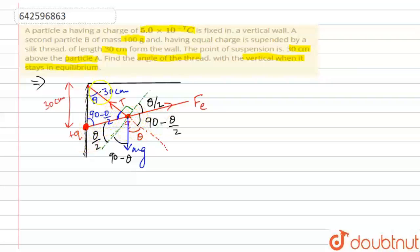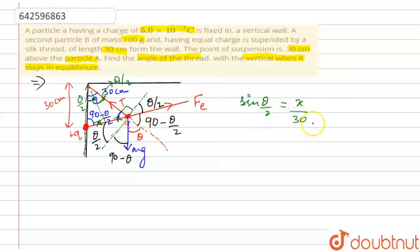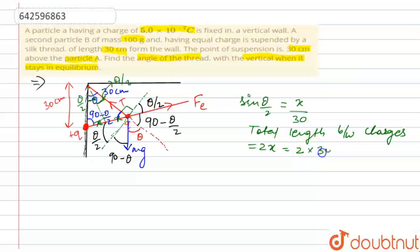We need to find the distance between the two point charges to calculate Fe. I draw a perpendicular giving a smaller triangle. From sine theta by 2 = x / 30, we get x = 30 sine theta by 2. The total distance between the charges is 2x, which equals 2 × 30 × sine theta by 2, giving 60 sine theta by 2.